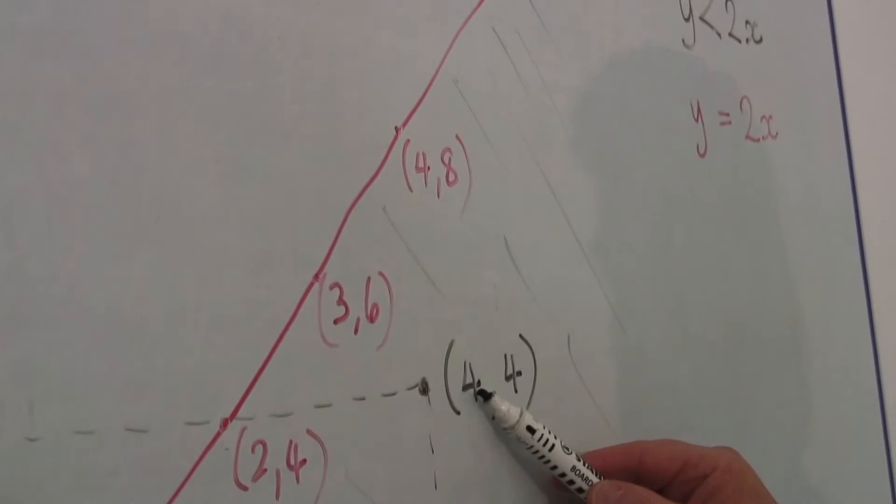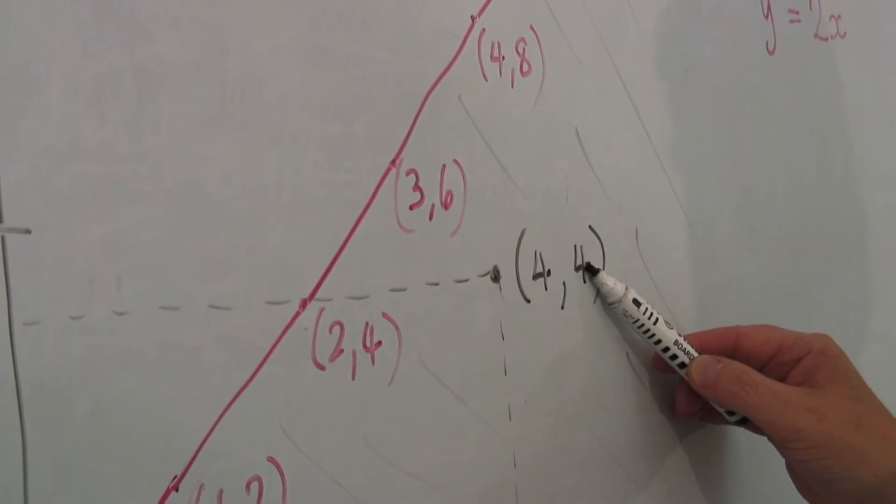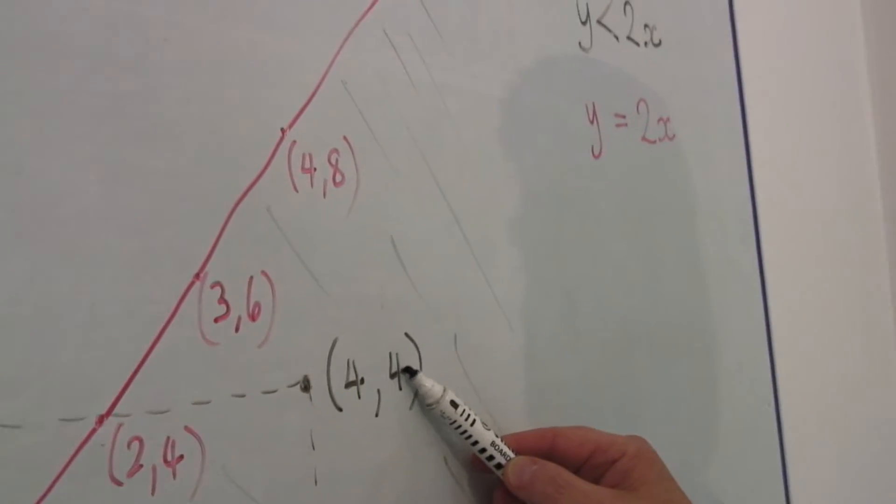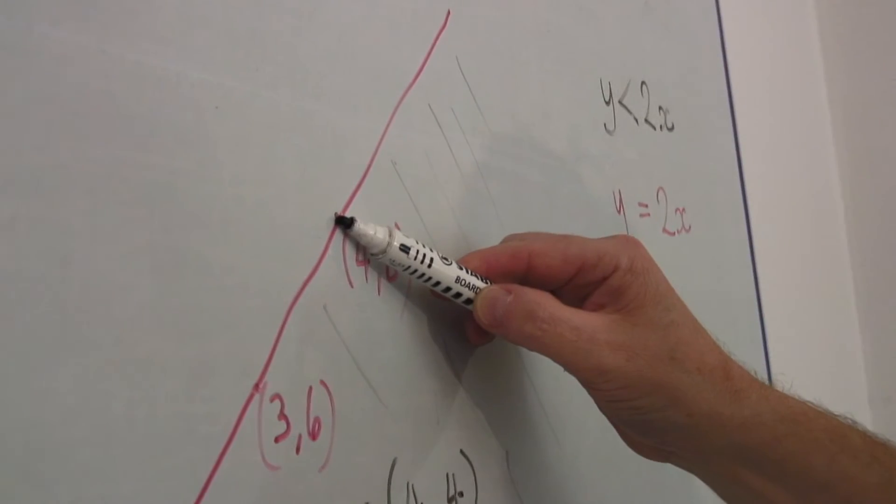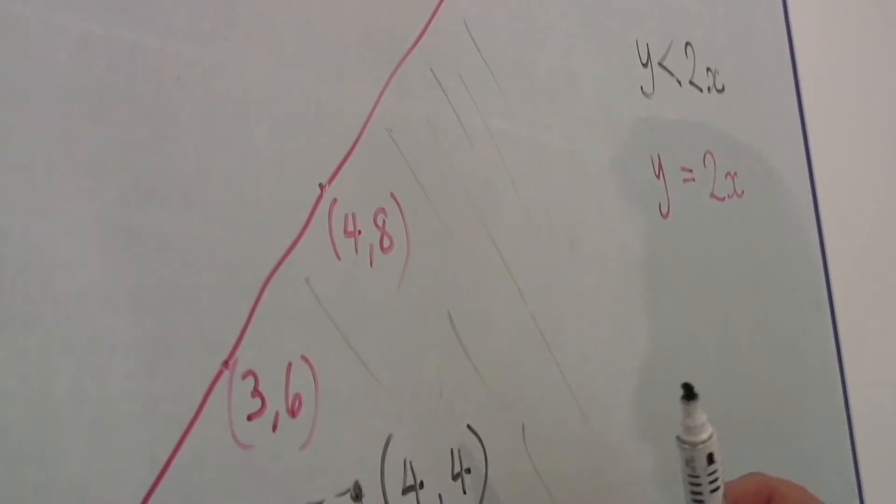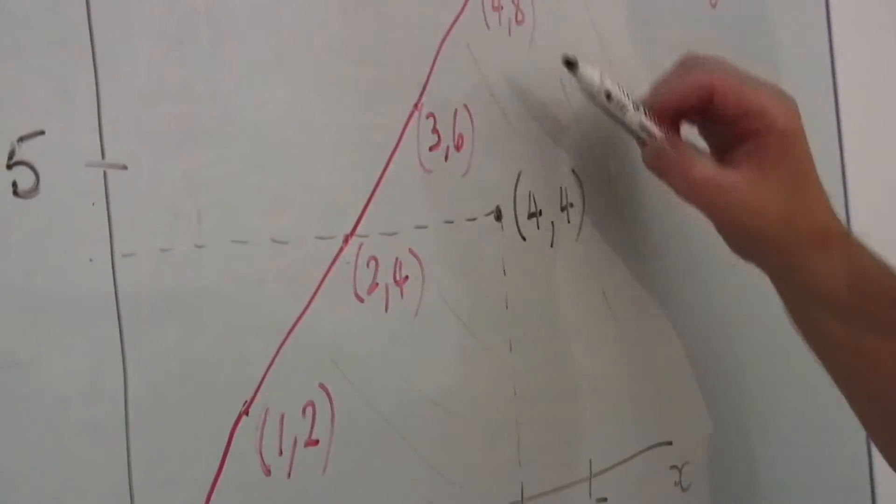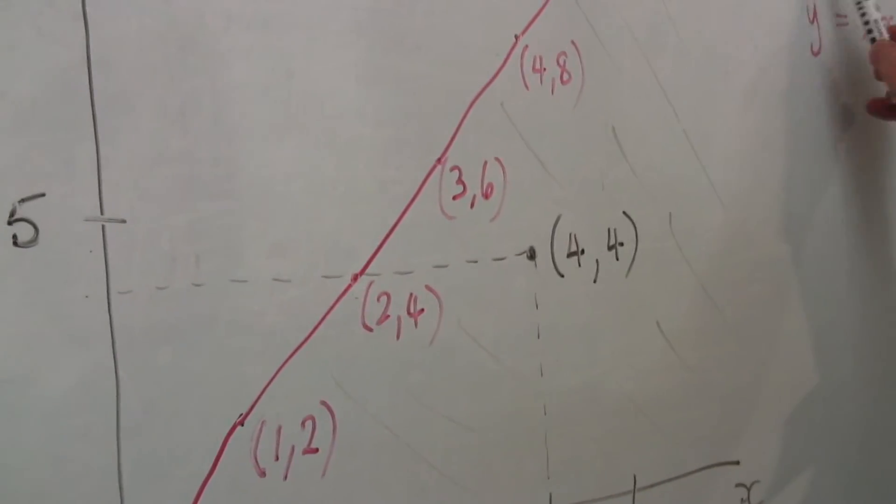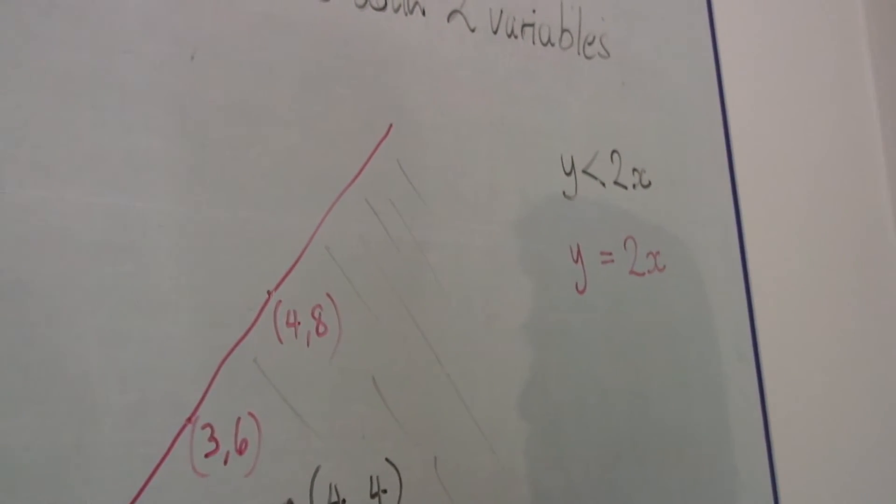So x is four, two x is eight. So this should be eight if it's on y equals two x. And you can see four, eight is on the line. But if y is only four, it means that it is less than two x. And therefore, it satisfies the equation y is less than two x.